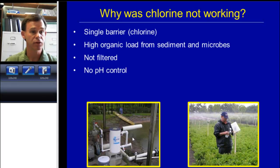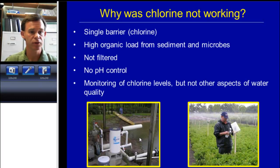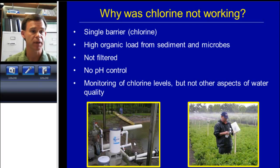There also wasn't any pH control, which is very common in nursery water treatment with chlorine. As anyone who has a swimming pool knows, pH management is very important — if that pH is too high, then the chlorine is in a weak sanitizing form. So pH management in terms of acid injection and pH monitoring go hand in hand with chlorination. The grower was doing a good job of checking chlorine levels delivered to the outlet going out to the crops, as well as what was being injected. But there wasn't regular testing of other aspects of water quality, such as bacteria counts or sending samples off to a plant pathology lab for testing of Pythium or Phytophthora.